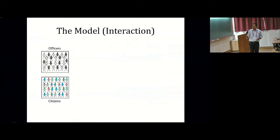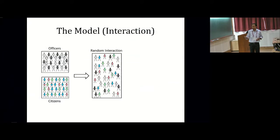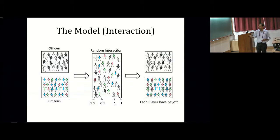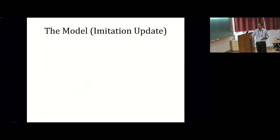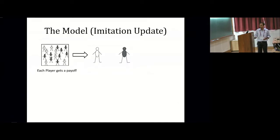So this is the cartoon of how the model proceeds. We have the first part, which consists of the interaction. We have random pairings between officers and citizens, and each pairing results in payoffs to each. And as a result, the payoff is calculated for every pair that is generated in the population. And after the payoffs have been calculated, the strategy update takes place.